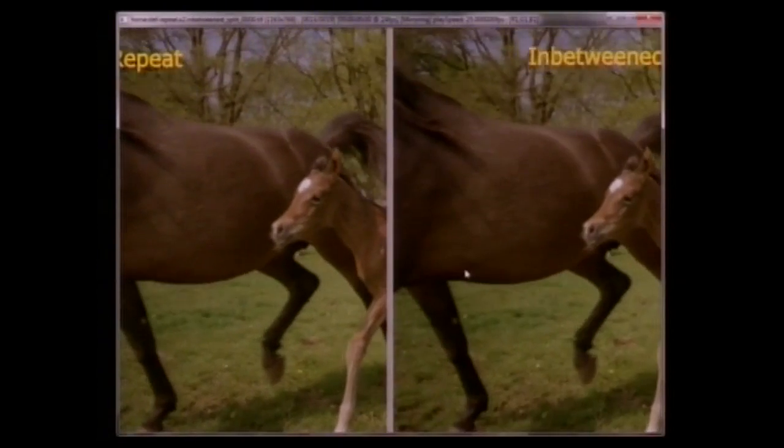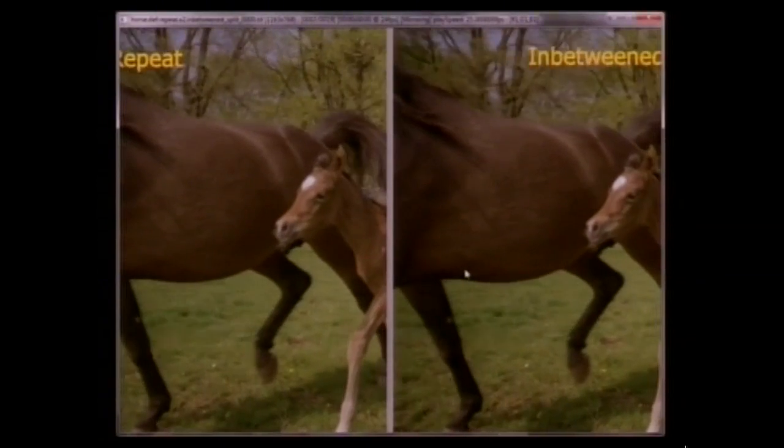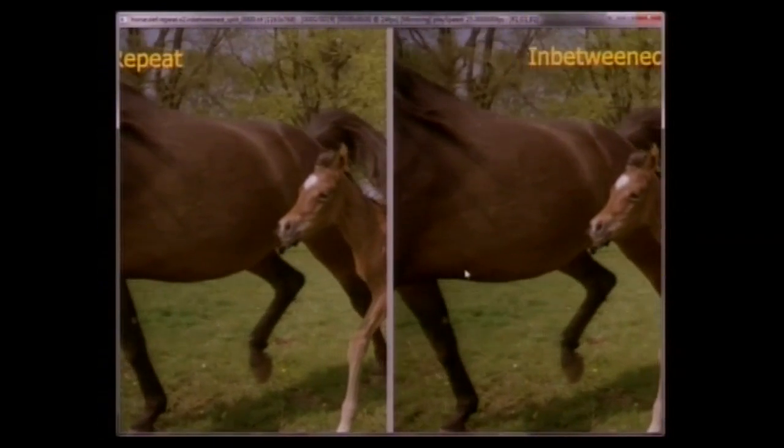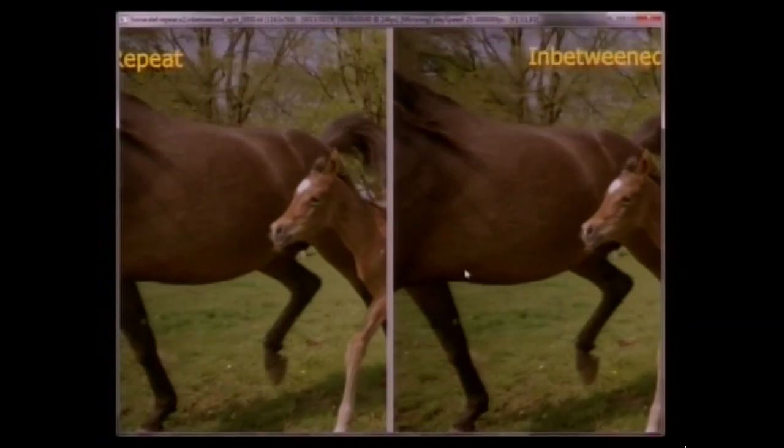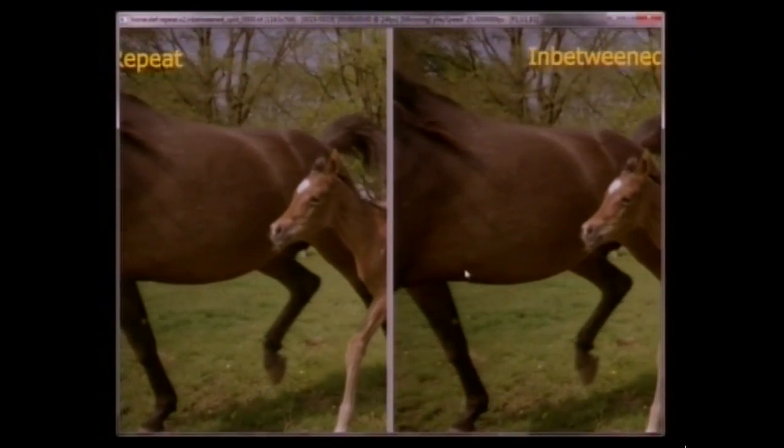OK. So on the left here, what I'm doing is taking 11 frames and going to 22 by just repeating them. And on the right, I'm taking 11 frames and going to 22 by building these new frames in between, according to this motion information. So you can see on the right, it's way smoother than on the left, right?